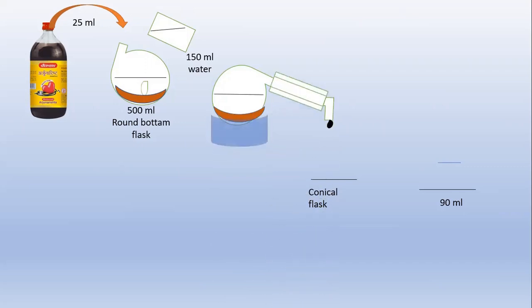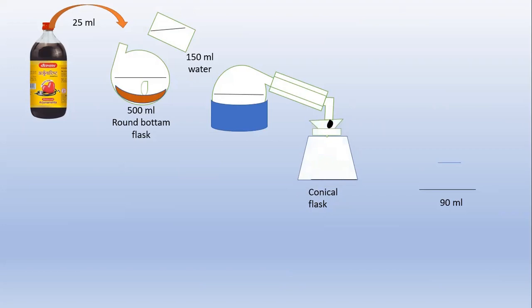Set up the distillation assembly and apply heat. The mixture is heated — the boiling point of water is 100°C, but alcohol boils at a maximum of 80°C. So the alcohol content is evaporated first, collected, and we collect that alcohol into a conical flask. The volume of distillate that collects tells us how much alcohol is present.